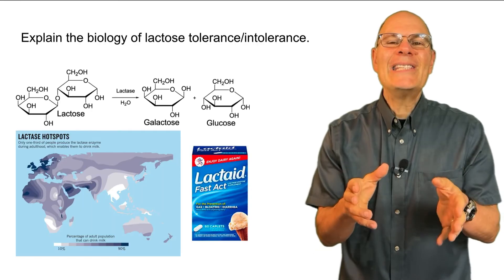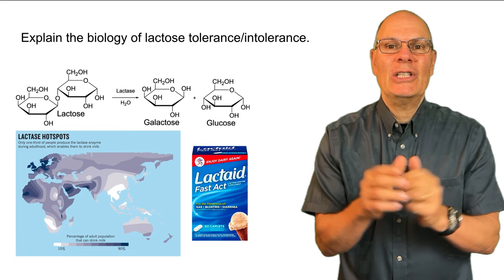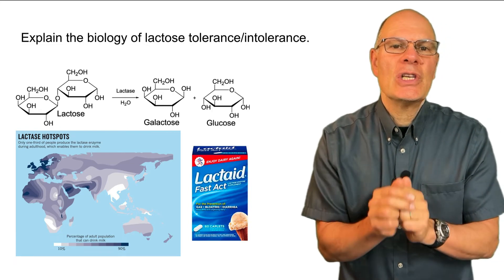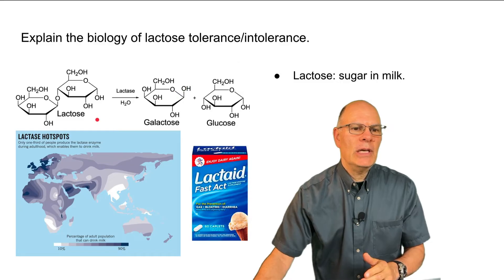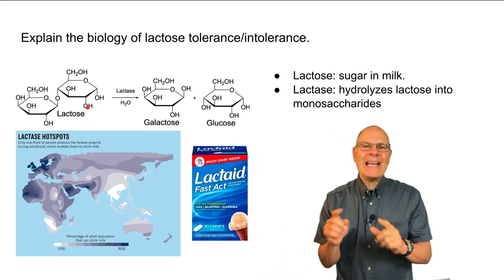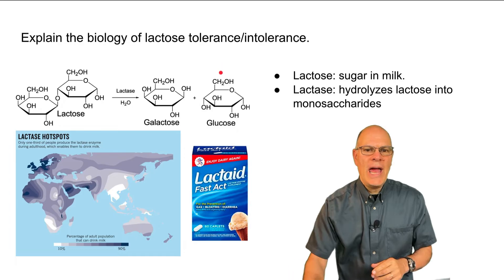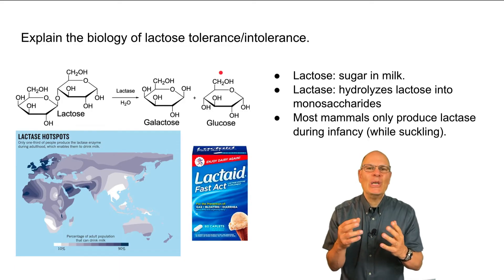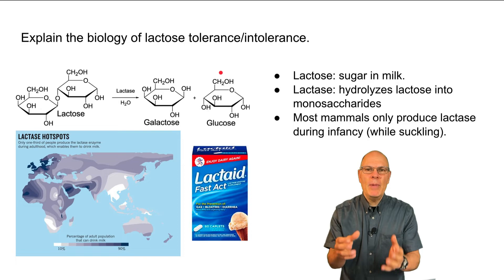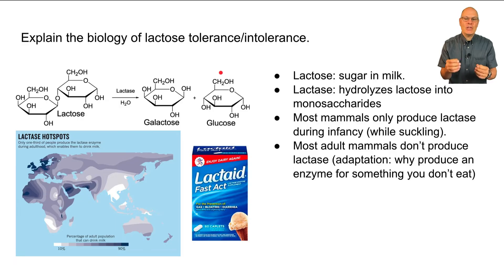Let's end our review of carbohydrates by looking at an issue in relatively recent human evolution related to carbohydrates — the biology of lactose tolerance and intolerance. Lactose is the sugar in milk; it's a disaccharide. Lactase is the enzyme that hydrolyzes lactose into monosaccharides. Most mammals only produce lactase during infancy while they're suckling, because that's the only time most mammals ever drink milk. So when you're an adult, you don't produce lactase — it's an adaptation. Why produce an enzyme for something you don't eat?